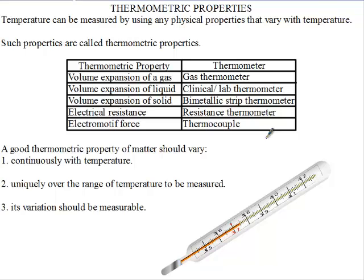A good thermometric property of matter should vary continuously with temperature. That means that as the temperature increases, it should give a corresponding increase — a corresponding reaction in the matter.